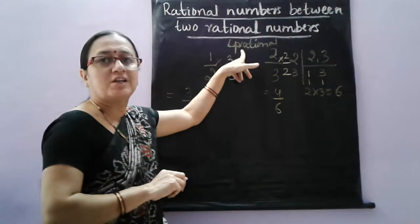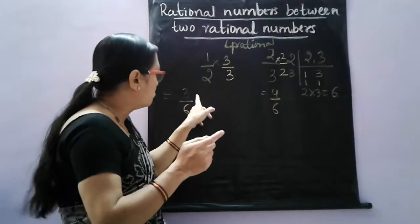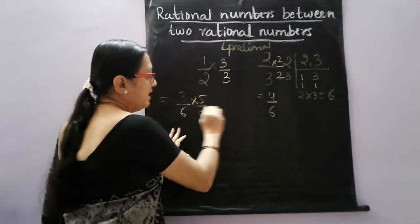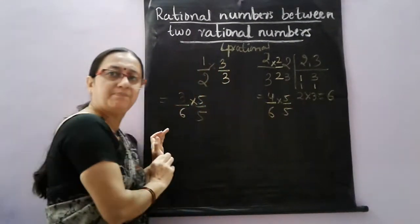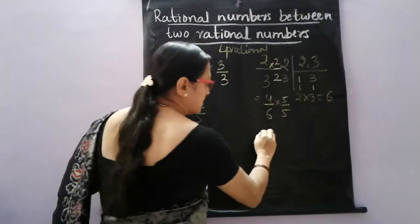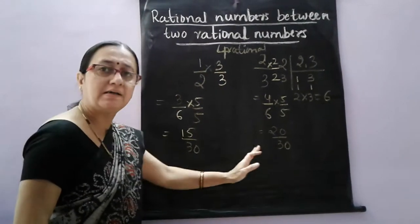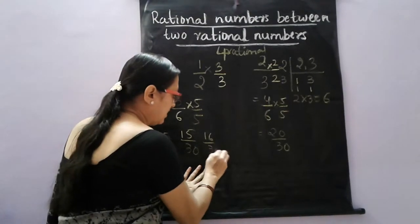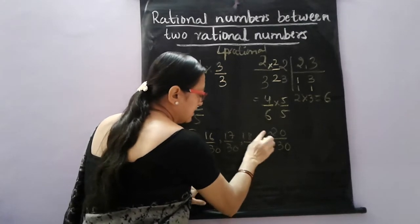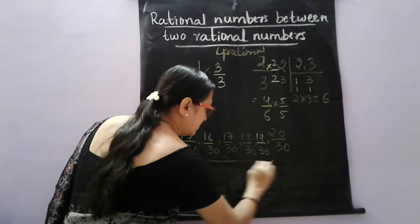Now we want 4 rational numbers, so again multiply numerator and denominator by n plus 1, which is 5 and 5 here. This gives 3 × 5 = 15 by 30, and 4 × 5 = 20 by 30. So between 15 by 30 and 20 by 30, the numbers are: 16 by 30, 17 by 30, 18 by 30, and 19 by 30. So those 4 rational numbers are our answer.